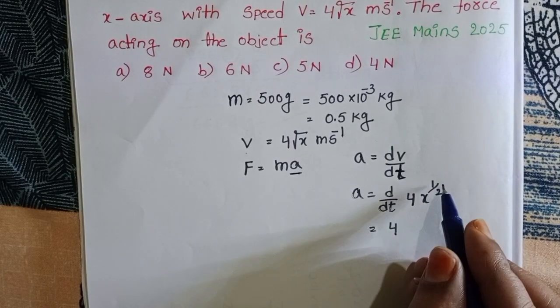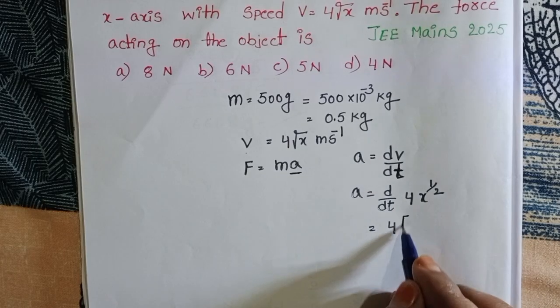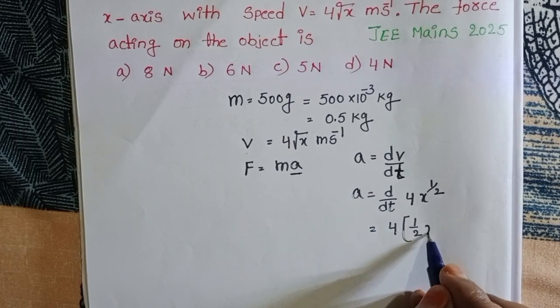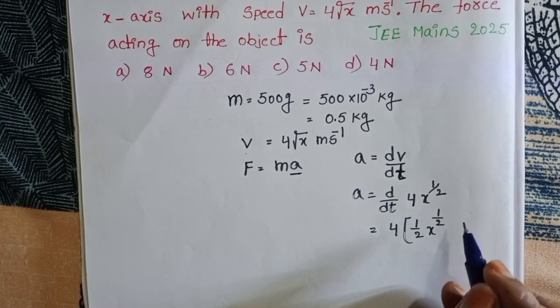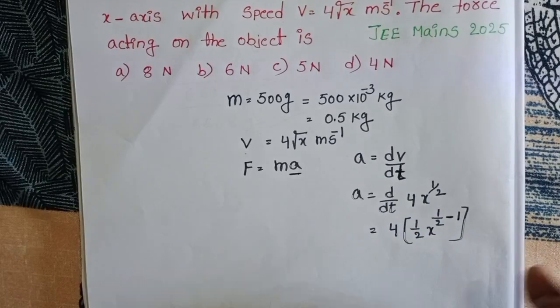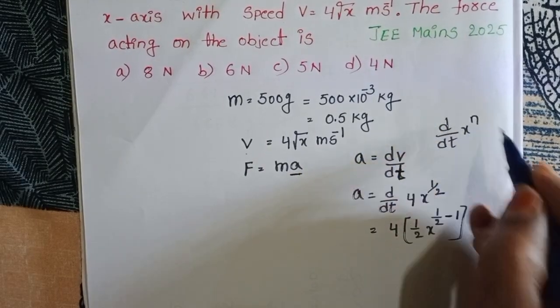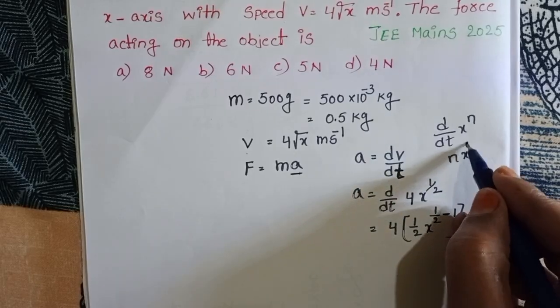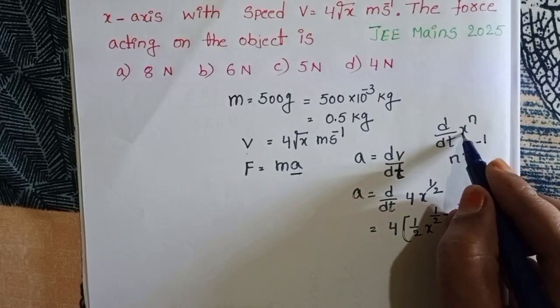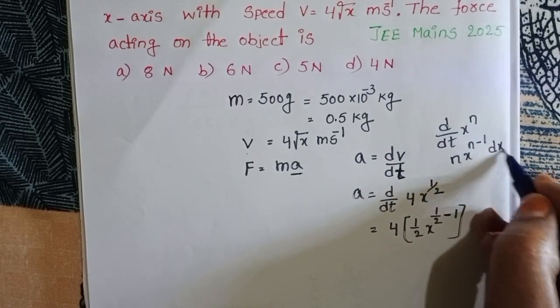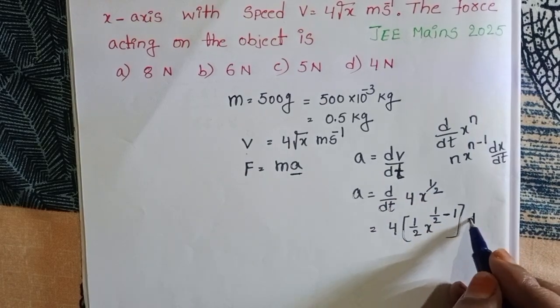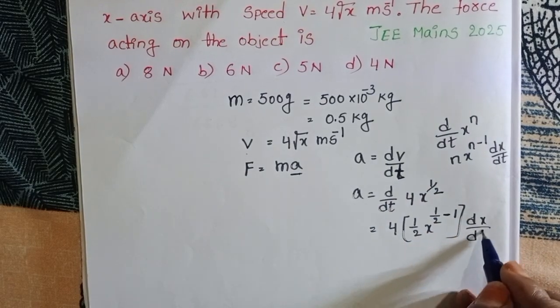d/dt of x to the power 1/2 becomes 1/2 times x to the power (1/2 minus 1). The formula is n times x to the power (n minus 1). Now differentiate x: dx/dt.